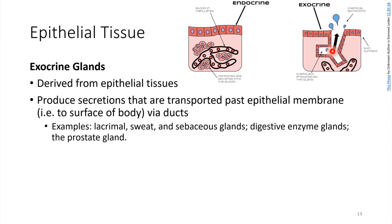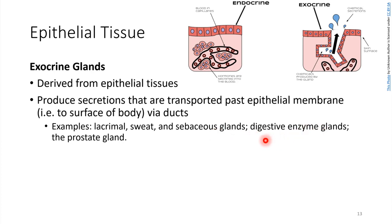There are lots of different examples of exocrine glands. Lacrimal glands are the tear glands near your eyes. Sweat glands are found throughout the body. Sebaceous glands are oil glands — pretty much every hair has a sebaceous gland associated with it at its base. In the digestive tract, enzymes are secreted by epithelial cells. And the prostate gland — we'll come back to that one when we talk about reproduction.